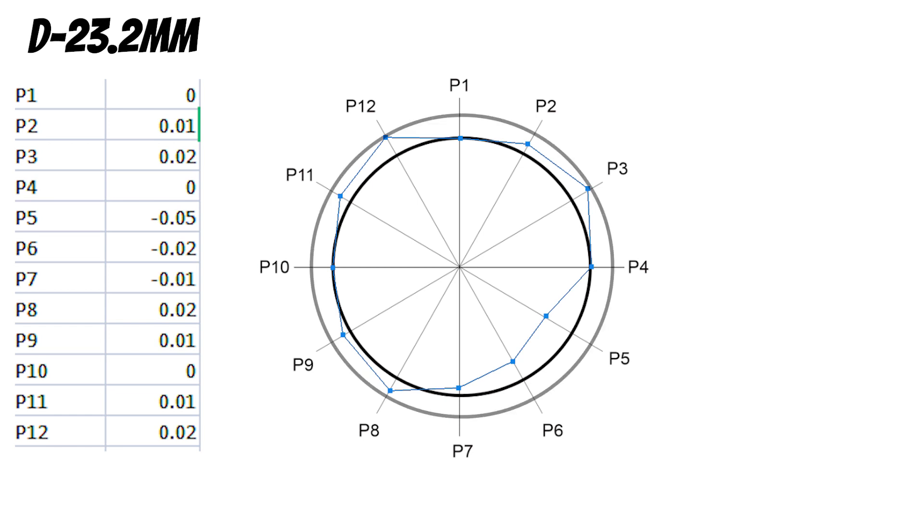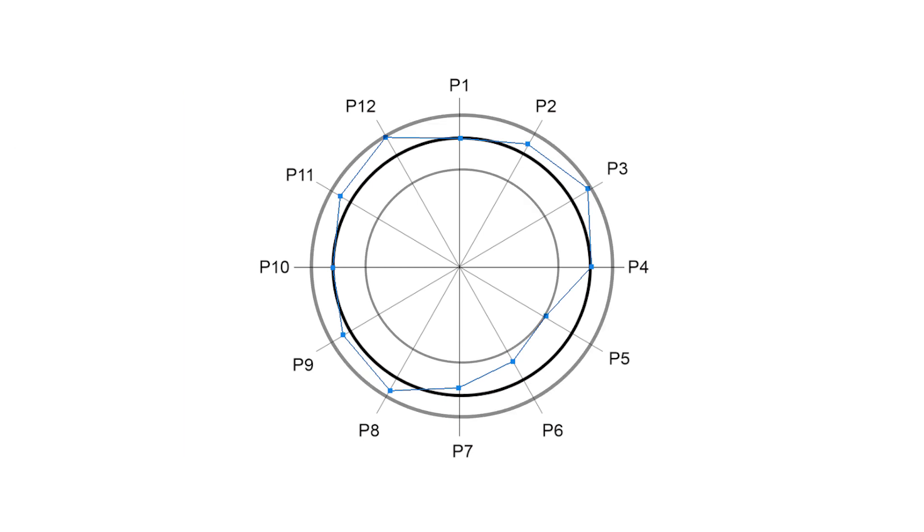Now draw a circle on maximum deviation point and minimum deviation point. The distance between these two circles is called circularity error.